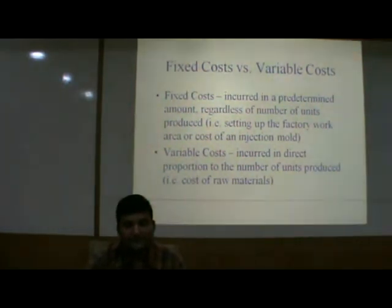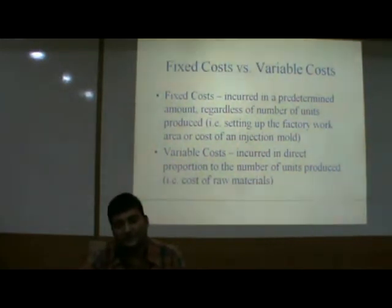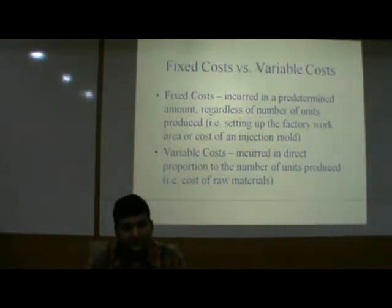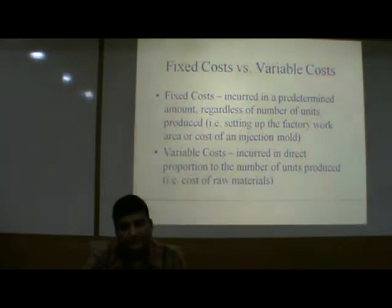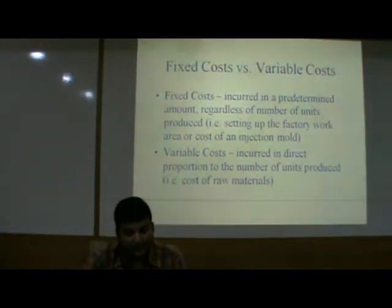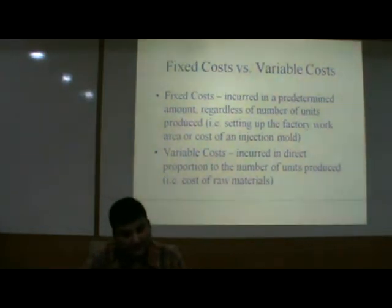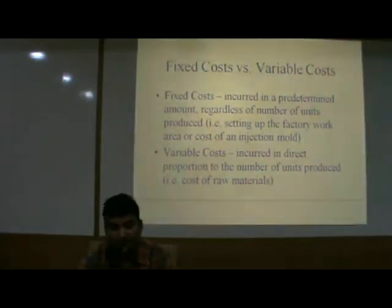Fixed cost is a cost incurred in a predetermined amount regardless of the number of units produced — for example, setting up the factory work area or the cost of an injection mold. Fixed cost is a defined cost. Variable cost is incurred in direct proportion to the number of units produced — for example, the cost of raw materials — which will increase over time during operation.